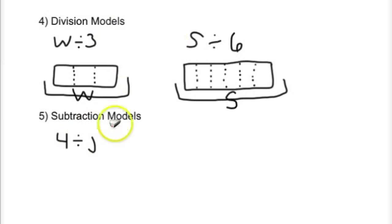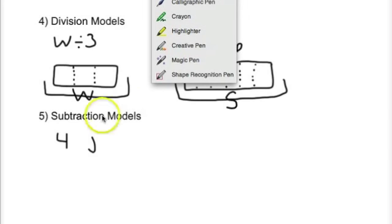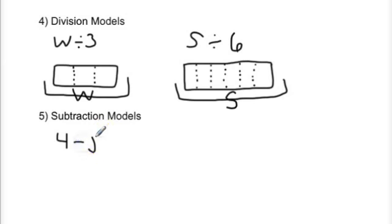So we're looking at our subtraction model, four minus J, we would model it this way. We need to, again, we're going to represent all parts of this algebraic expression.